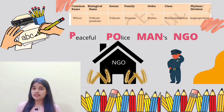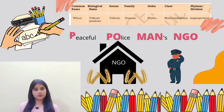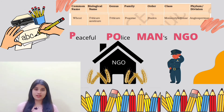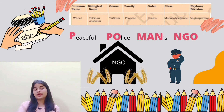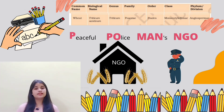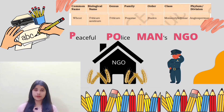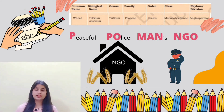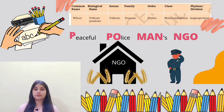And the last one is Triticum aestivum, i.e. wheat. And the trick to memorize its taxonomy is 'Peaceful Policeman's Angio.' Here 'Peaceful' represents Family Poaceae, 'Policeman's' represents Order Poales, 'Angio' represents Division Angiospermae, and the class is Monocot.